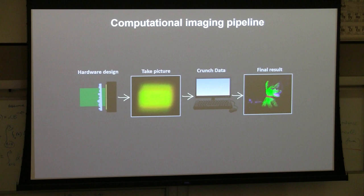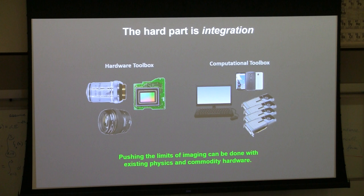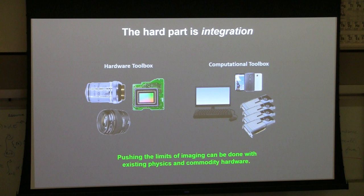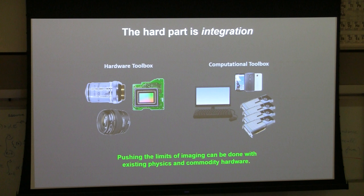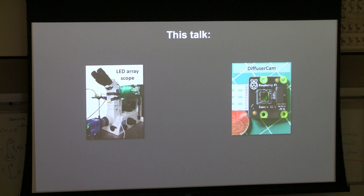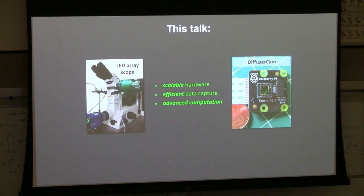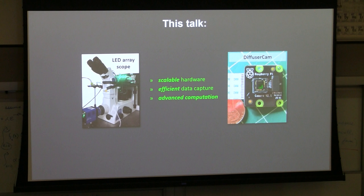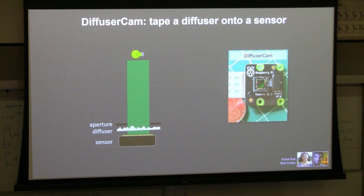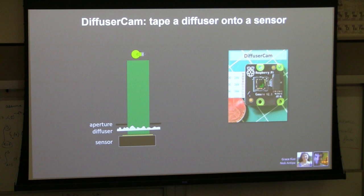The hard part is integrating hardware and software in the smartest way possible. In my lab, we focus on pushing the limits of imaging without any fancy new physics or very expensive hardware, because we're focused on making things that are easily adoptable — you can replicate this in your own lab or sometimes at home. I'm going to talk about two projects: the diffuser cam lensless camera, and a second project. Both have properties of being really scalable and using efficient data capture so we're not capturing wasteful information.